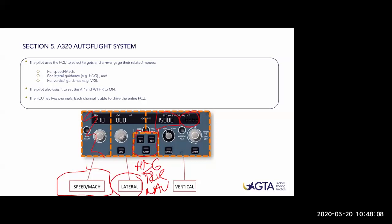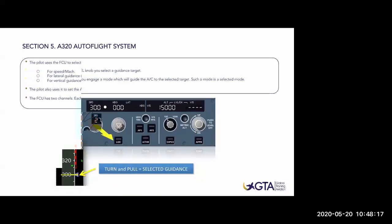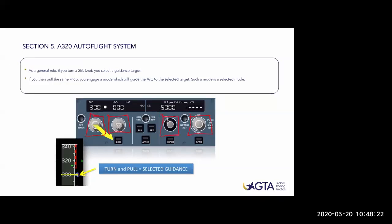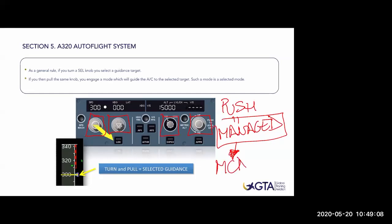The FCU has four knobs. As a general rule, those knobs can be pushed or pulled, which gives them different names and different effects. If I push any of those knobs, it means 'manage' - automatic mode. When I push, it goes to managed mode, which is programmed through the MCDU. For example, if I press the speed, the aircraft takes control of the speed and goes to the managed speed set on the MCDU - economic speed or long-range cruise, whatever was programmed. Pushing the heading gives NAV mode, following the routing selected on the MCDU.